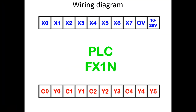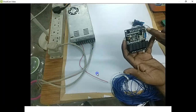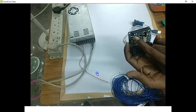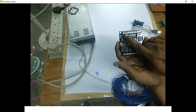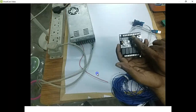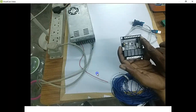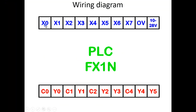This is the wiring diagram of this particular board. On this side you have 10 screw points: X0, X1, X2, X3, X4, X5, X6, X7, plus the power supply points — 0 volt and either 12 volt or 24 volt. That is what is mentioned here. This is specifically for the PLC FX1N, which accepts 10 to 28 volt.